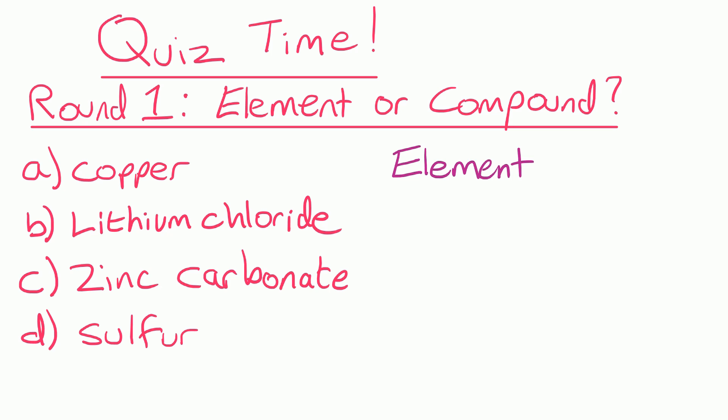Question a: copper is an element that would be made of all the same type of atom, and it's also on the periodic table. Lithium chloride is a compound because it's made from lithium and chlorine, two chemical elements chemically joined together.